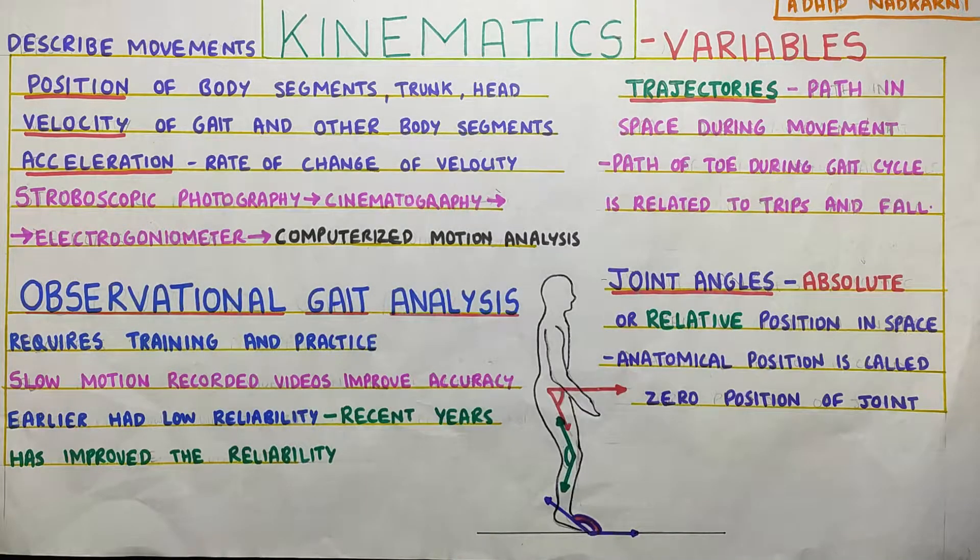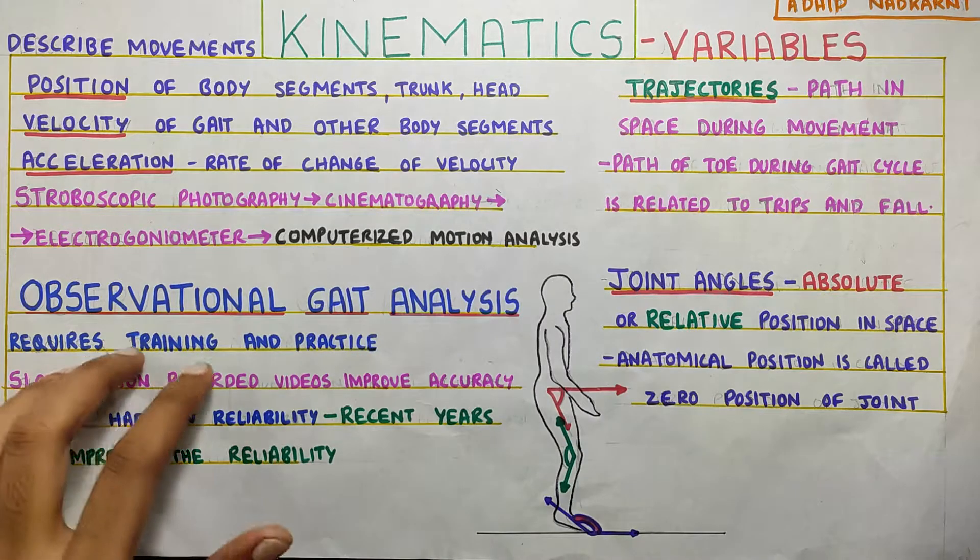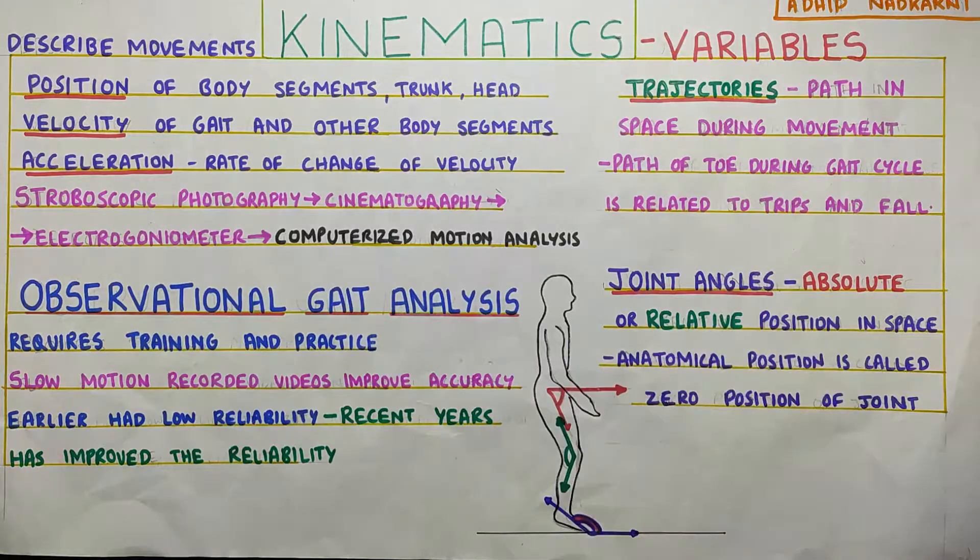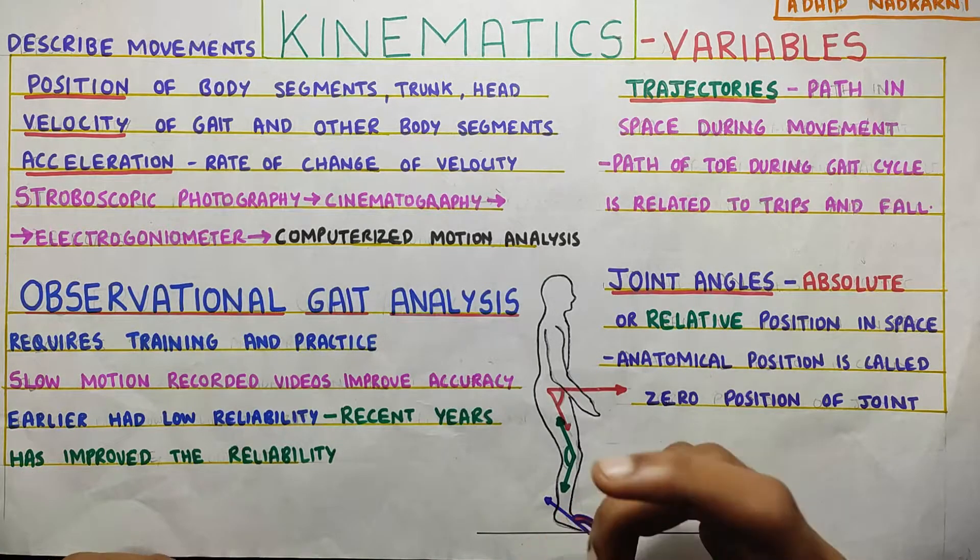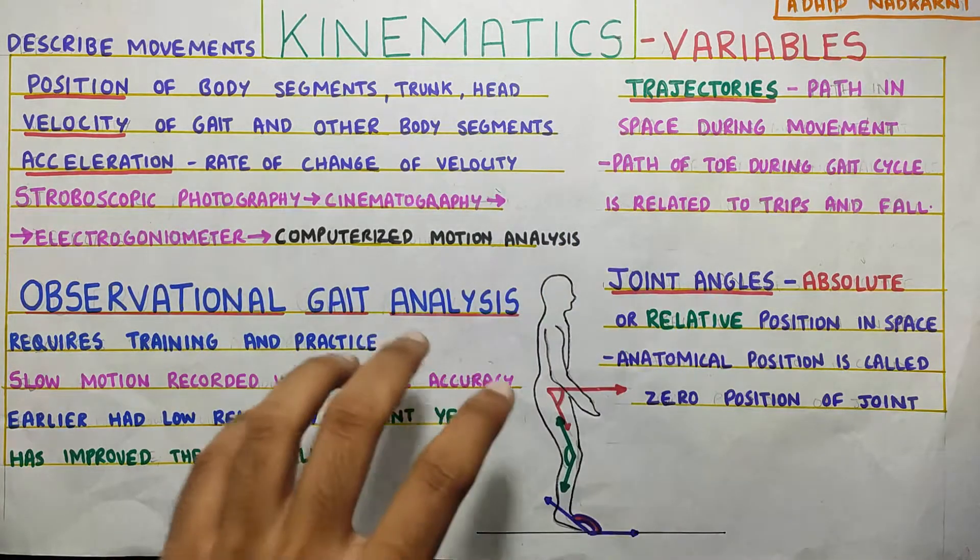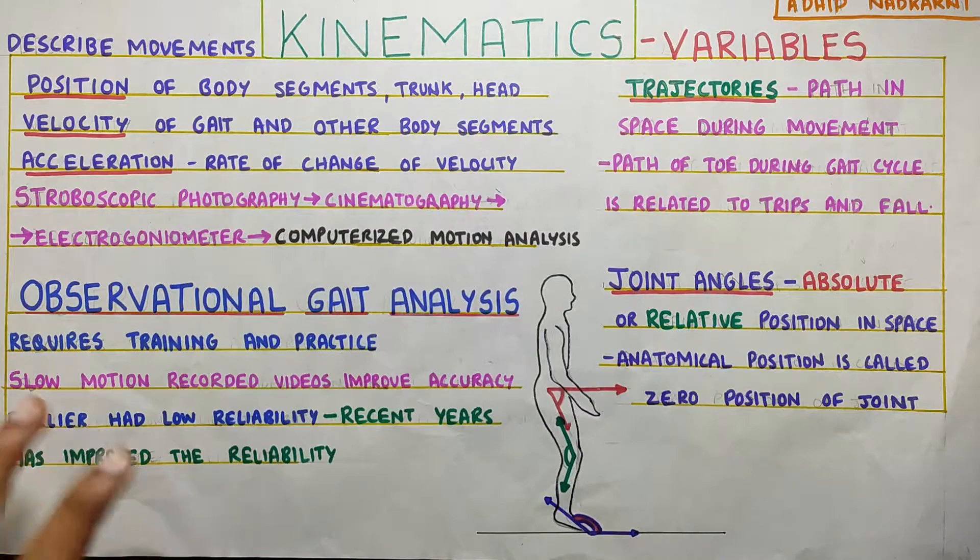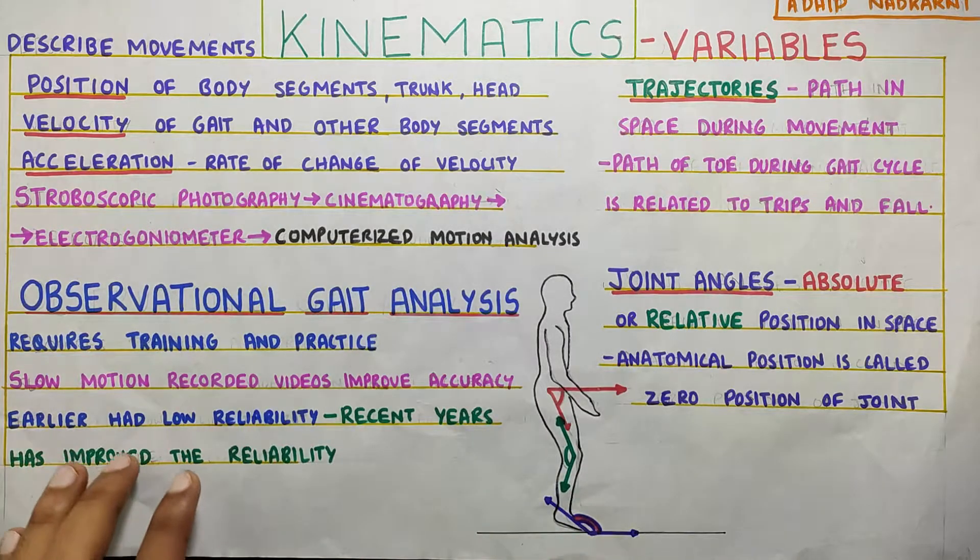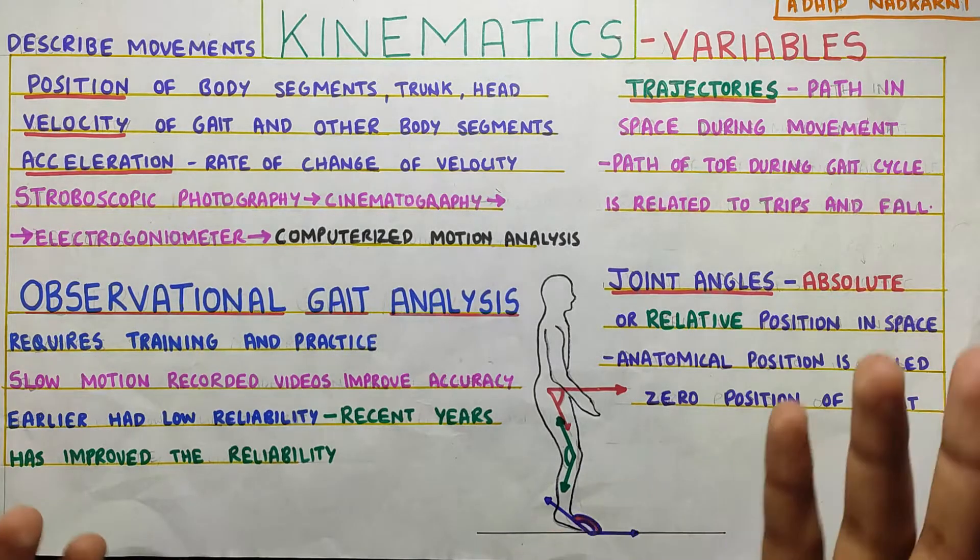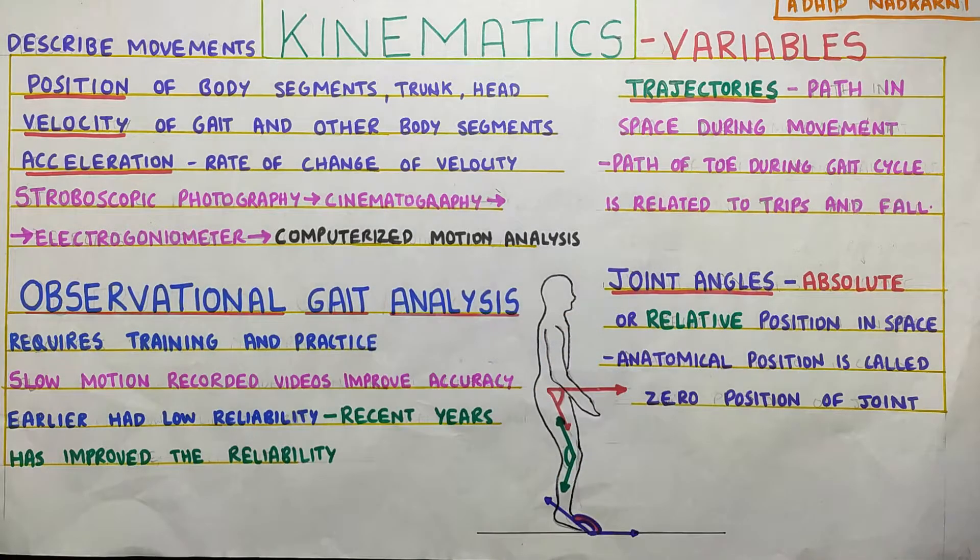Apart from this, there is also the observational gait analysis that we do, which requires a lot of training and practice because you have to observe the person walk over and over again so that you get idea of what is normal. And then you need to pick up the shortcomings or the deviations that you can see in the gait. So the accuracy of this wasn't that great, but in recent years with slow motion recorded videos, there is definitely some improvement in the accuracy. The reliability was very low, but in recent years with the slow motion and improved technology, improved camera quality, the reliability has definitely improved.